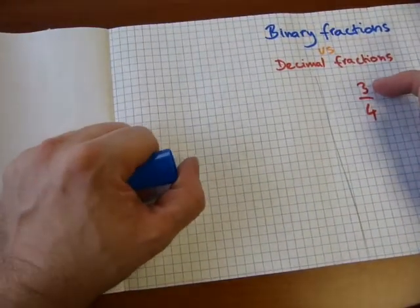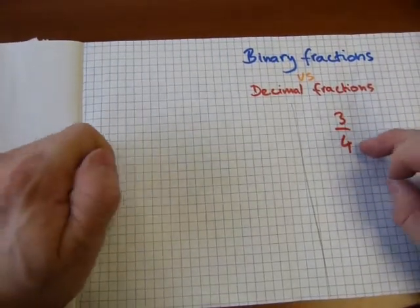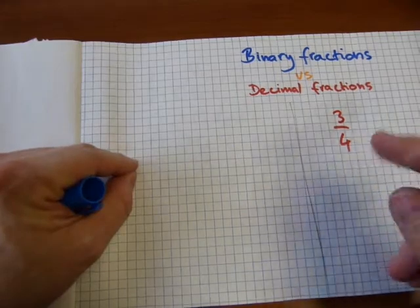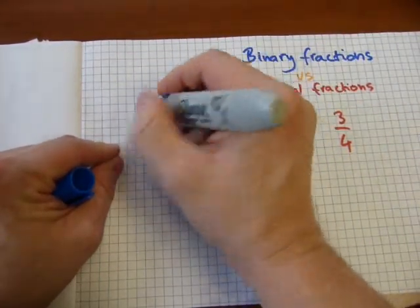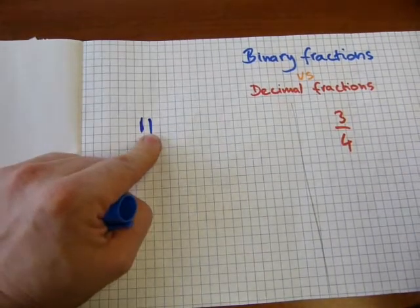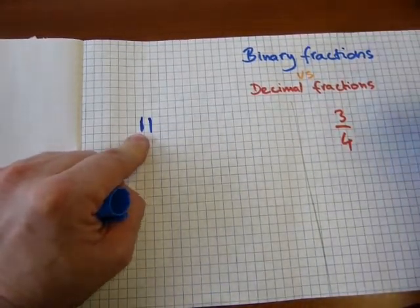Now notice that 3 is just a normal whole number 3, and that's just a normal whole number 4. So to make a fraction in decimal, 3 is written as 1-1. The first 1 in the 1's place value, the second 1 in the 2's place value. 1 at the 2's and 1 at the 1's, so that's 3.